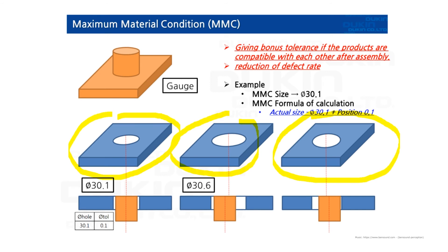But then the second one manufactured as 30.6. And the position tolerance would be 0.6. Because MMC size is at 30.1 and then the actual size is 30.6. So subtract 30.6 to 30.1. Then 0.5 is remaining. So add that 0.5 to a position tolerance.